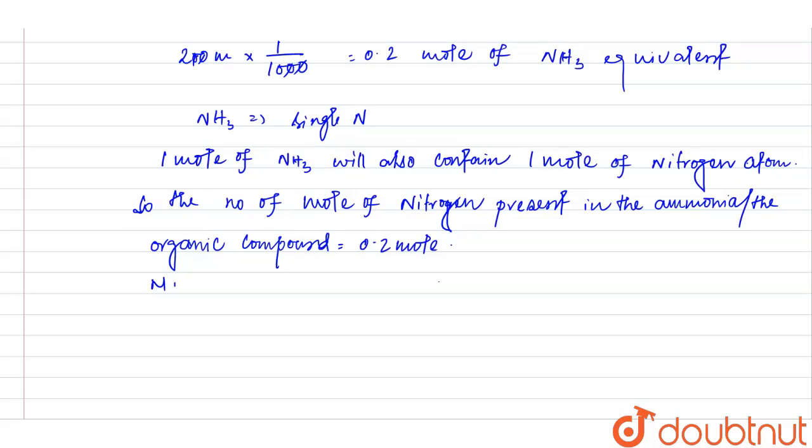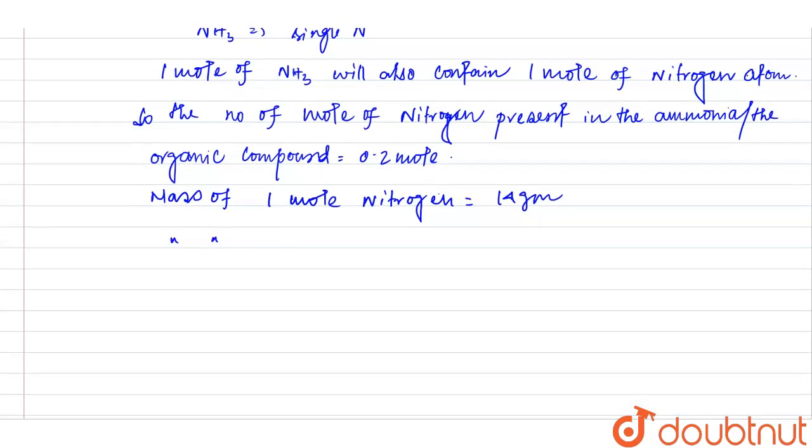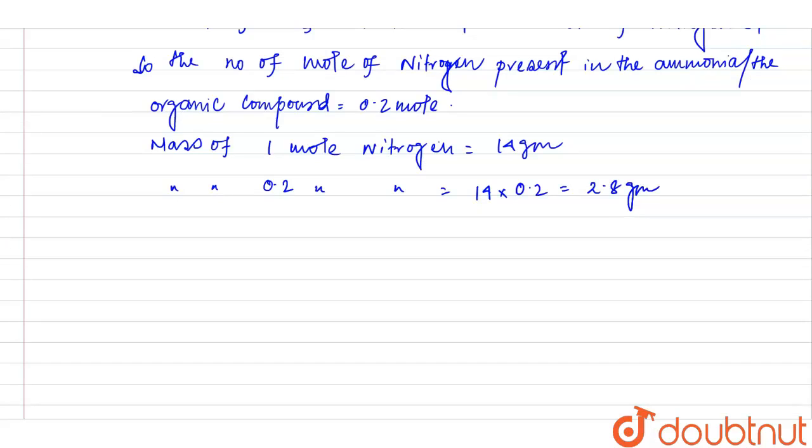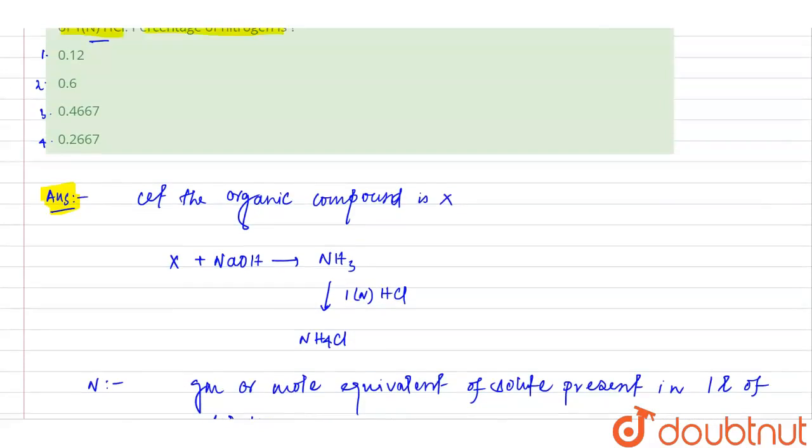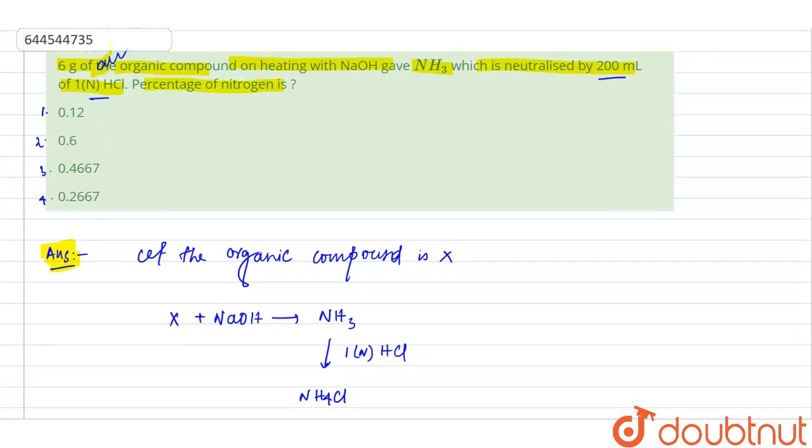Now, mass of 1 mole nitrogen equals to 14 grams. So mass of 0.2 mole nitrogen will be 14 into 0.2, that is 2.8 grams. The weight of the nitrogen will be same as the weight in the ammonia because one molecule of ammonia has one atom of nitrogen and one mole of ammonia contains one mole of nitrogen.